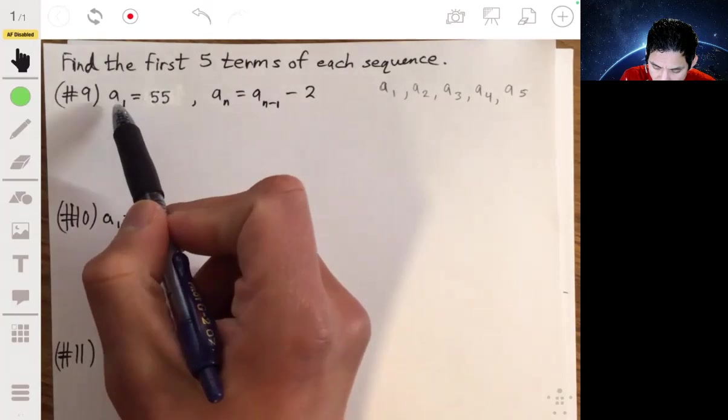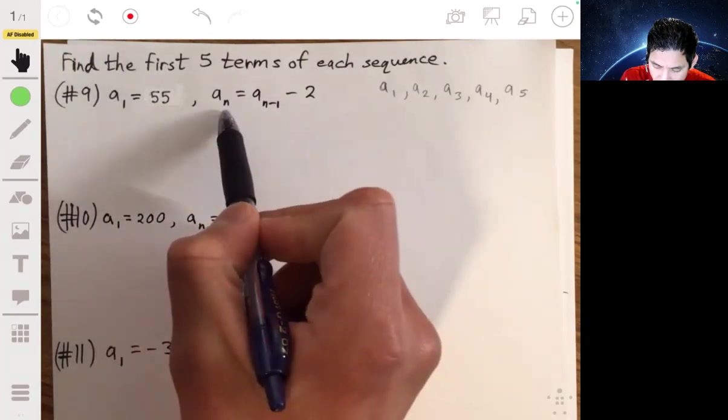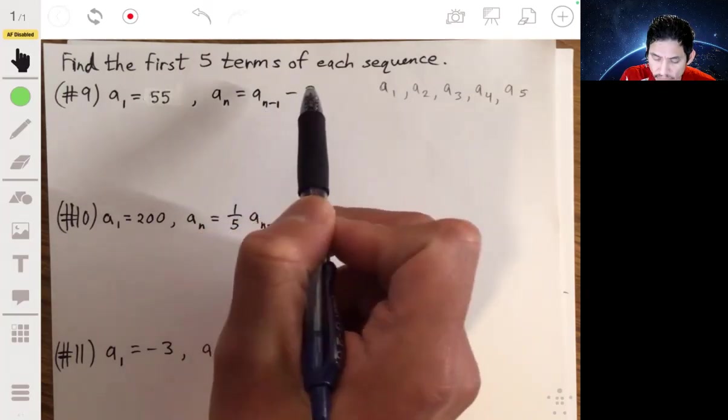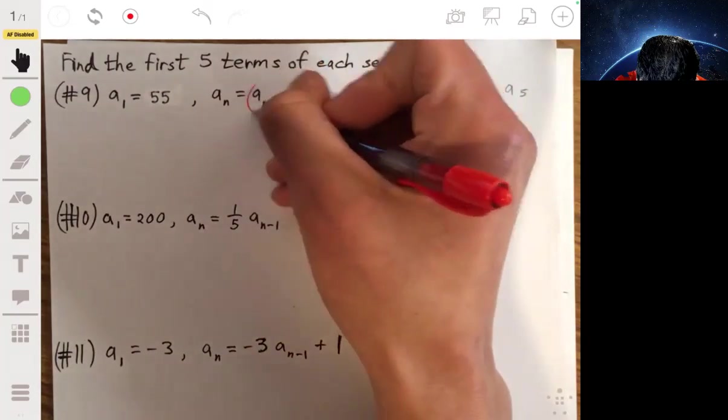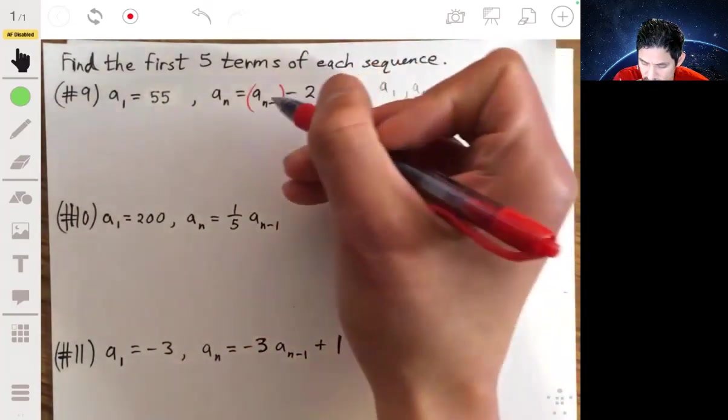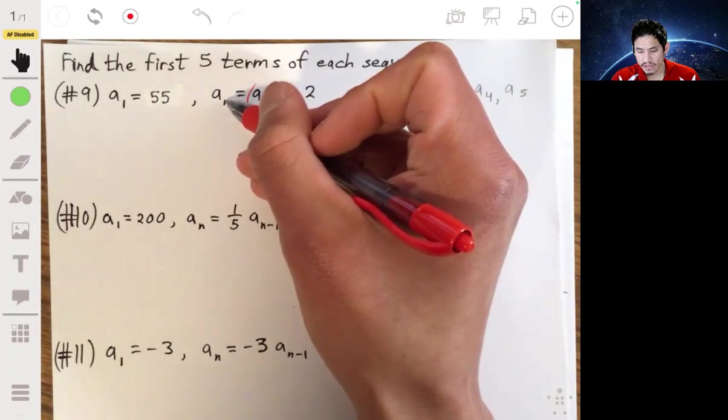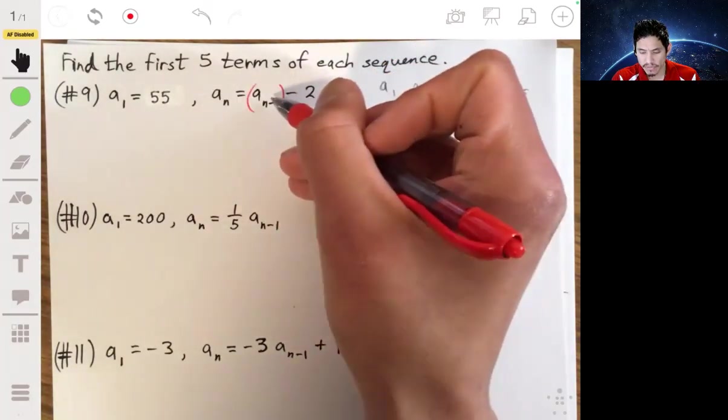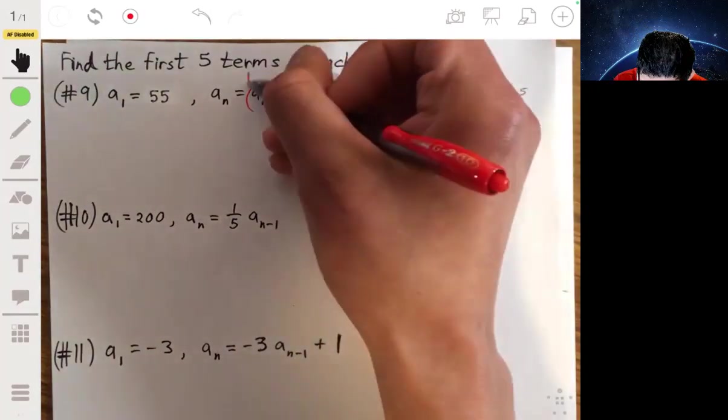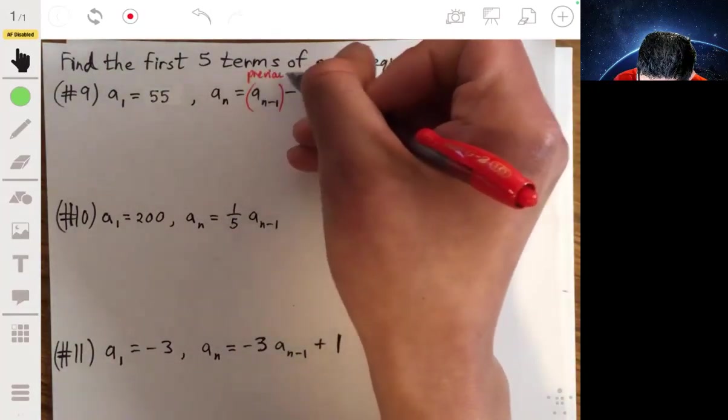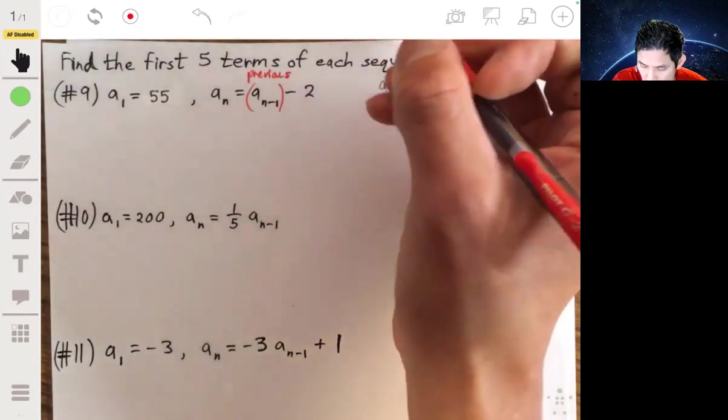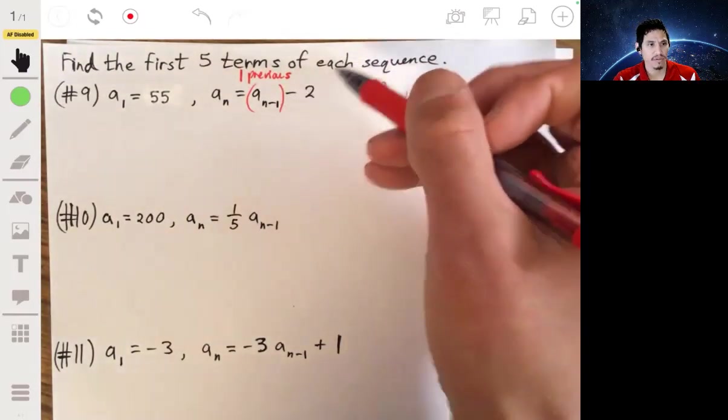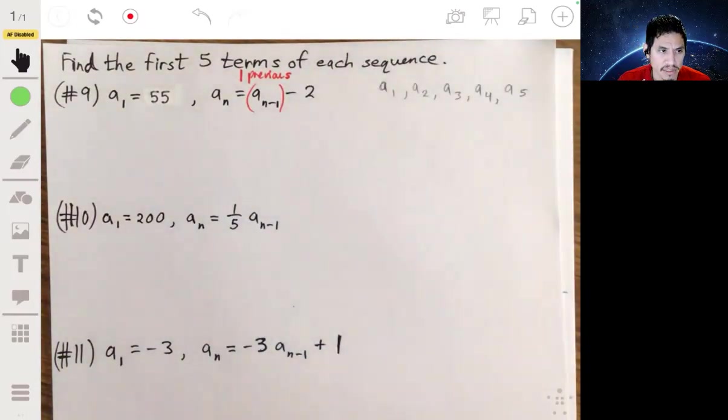So number nine, we have that a1 is 55, and that the nth term, an, is equal to a(n-1) minus 2. So the key is to understand what this means. This is saying that the nth term, or an, the current term, is equal to the previous term or one term before the nth term. So think of this as the previous or preceding, or one previous minus 2. Once you get the pattern, it's pretty simple.